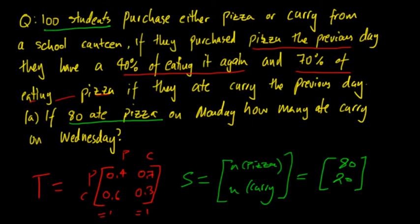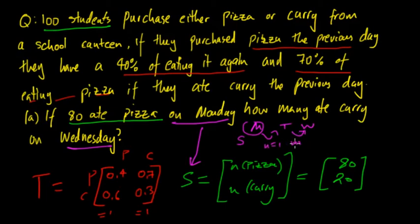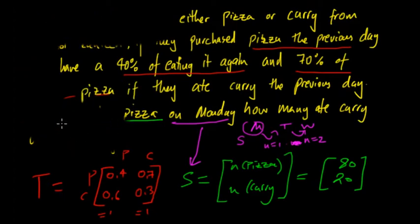So now remember that this is on Monday, so that's referring to the initial condition. Now how many people ate curry on Wednesday? So that's Monday, Tuesday, Wednesday. That's given by the initial, that's n equals 1, that's n equals 2. So now we know n equals 2, we've got the transition and we've got the initial condition. So we can sub this into the formula and work out what we get.